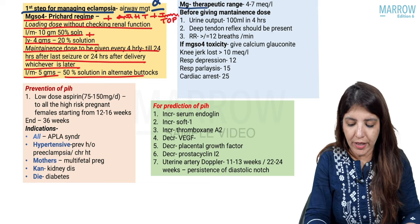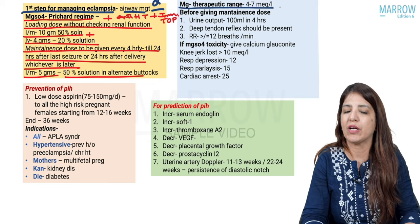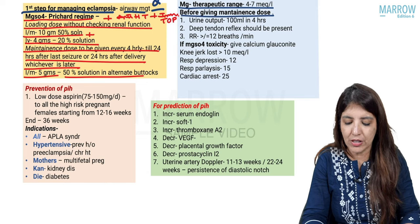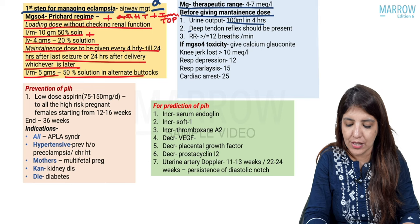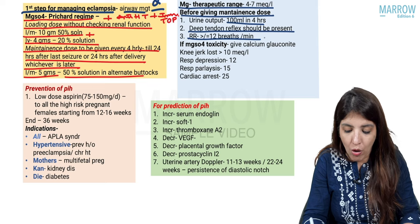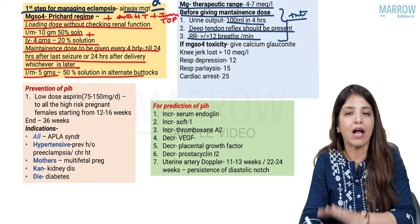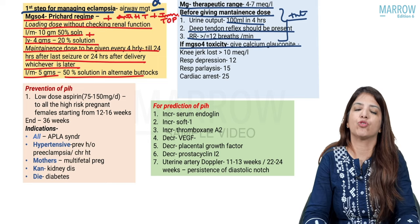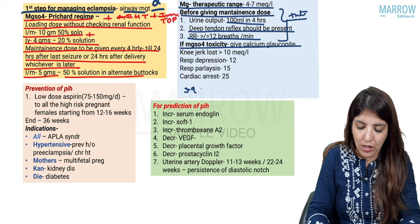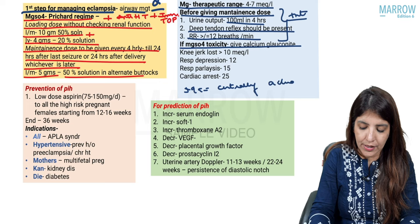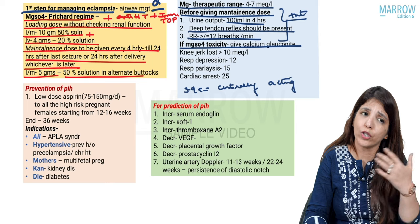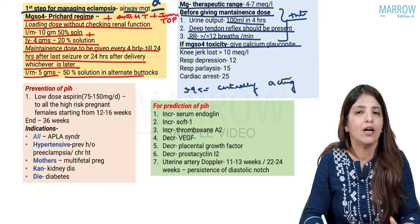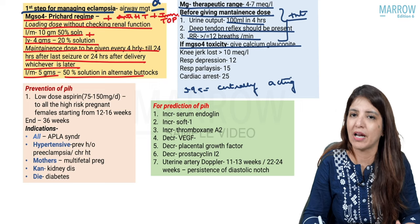The therapeutic range of magnesium is very narrow: 4 to 7 mEq/L. If less than 4, the patient will continue throwing convulsions; if more than 7, toxicity occurs. Before giving maintenance dose, check three things: urine output should be 100 ml in 4 hours, deep tendon reflexes should be present, and respiratory rate should be more than or equal to 12 breaths per minute. If any one of these is absent, do not give the maintenance dose. The antidote for magnesium toxicity is calcium gluconate. Magnesium is a centrally acting drug that blocks NMDA receptors, blocks acetylcholine release from nerve endings, and stabilizes membranes by blocking calcium channels.